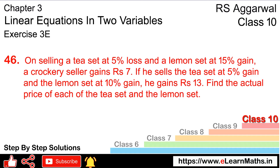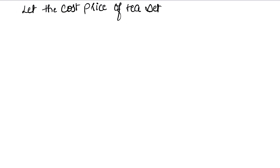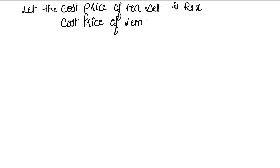हमें actual price, मतलब cost price निकालनी है tea set और lemon set की. तो जो चीज निकालनी होती है, हम उसको X और Y मान लेते हैं. Let the cost price of tea set be rupees X and cost price of lemon set be rupees Y.